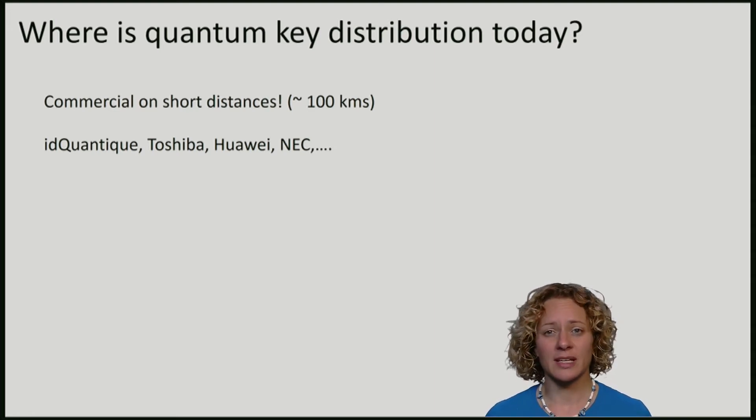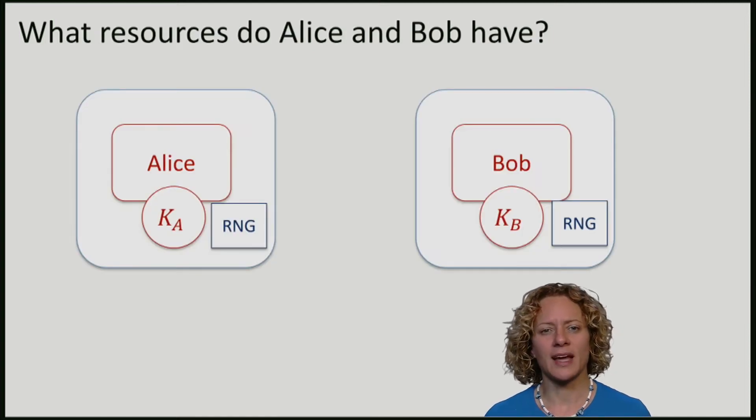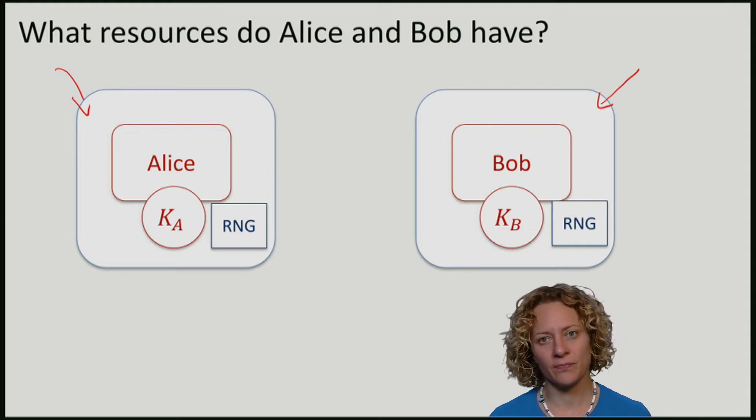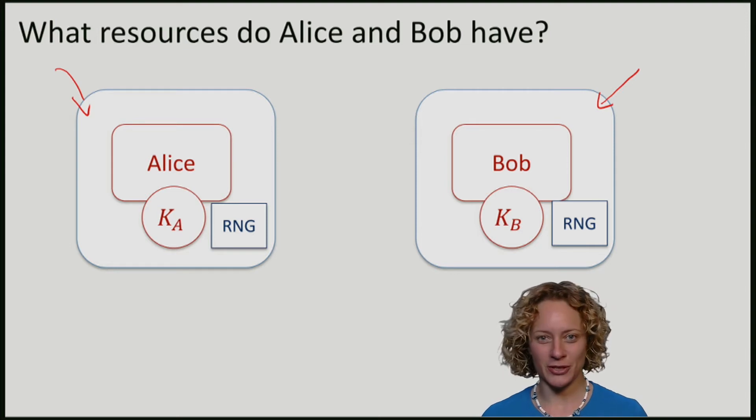What we want is a key distribution protocol. Alice and Bob are in impenetrable labs, so the eavesdropper cannot access and figure out what is going on inside. We will later relax this condition, but for the moment think that there is absolutely nothing going in and out of Alice's lab.